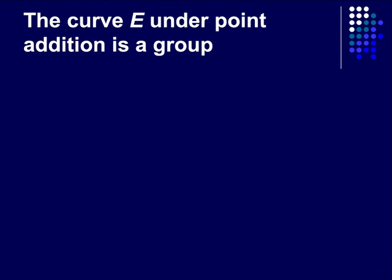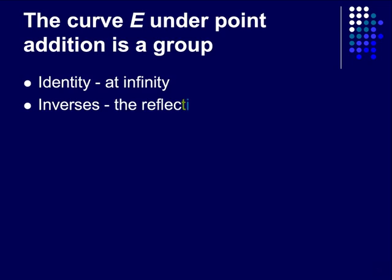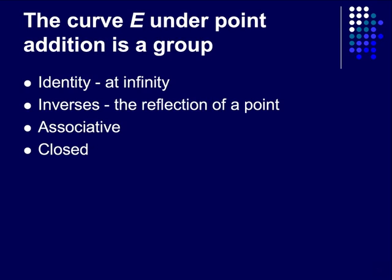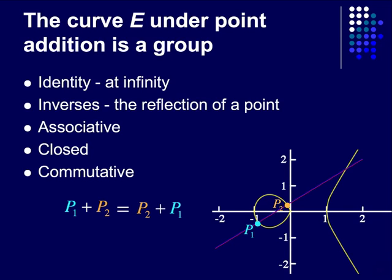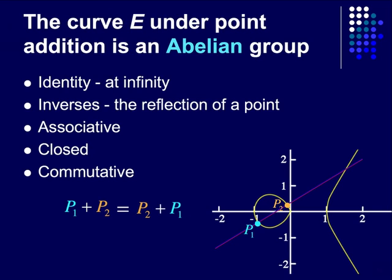With these properties in mind, we can say that the curve E under point addition is a group. It has an identity at infinity, it has inverses which are the reflection of a point, the operation is associative, and it's closed on the curve. But wait — if we're adding two points together and find the line between them, point 1 plus point 2 also equals point 2 plus point 1. Therefore, this operation is commutative as well. So not only is this a group, but the curve E under point addition is an abelian group, which gives it many applications, especially in cryptography. Thank you.